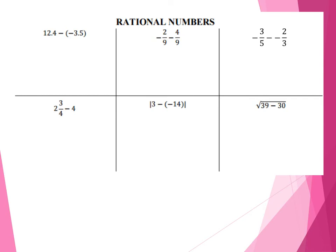First one, I have 12.4 minus negative 3.5. This would be minus a negative — so it's like adding the two numbers together. So 12.4 plus 3.5 is going to give me 15.9.